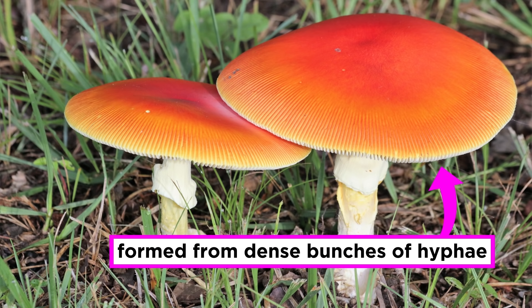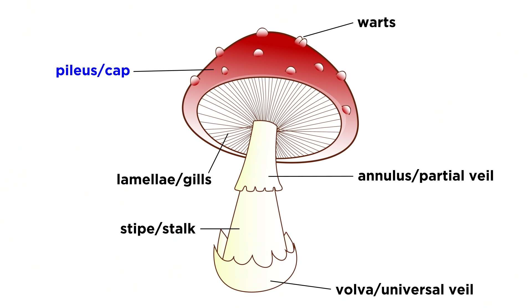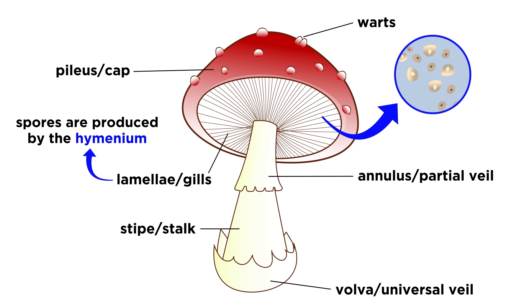Let's return to Amanita jacksonii. Any fruiting body of a mushroom is formed from dense bunches of hyphae. When a mycologist looks at a mushroom fruiting body, they look at the presence or lack of different characteristics of the structure in hopes of identifying the species. The top portion of the mushroom is called the pileus, or the cap. On the underside of the pileus, there are thin ribbon-like projections called lamellae, or gills. The lamellae are the site of spore production for this specific fungus. However, many other mushroom varieties have different structures that act as the site of spore production. We call the tissue layer of spore production in a fungus the hymenium.